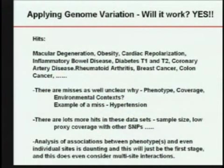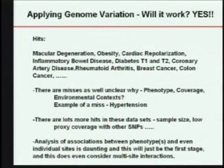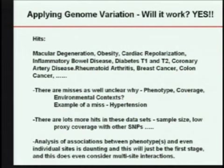It clearly works. We are getting misses too — a big one in the Wellcome Trust study was hypertension. Is this because we don't have complete genome coverage? Because of environmental factors? The phenotype? Or is it all rare variants and not common variants, since these GWAS studies only cover common variation? There are likely many more hits in these data sets. There's a big hit on chromosome 9 in cardiovascular disease, but that's not the only one — we just don't know how to get at the others yet.